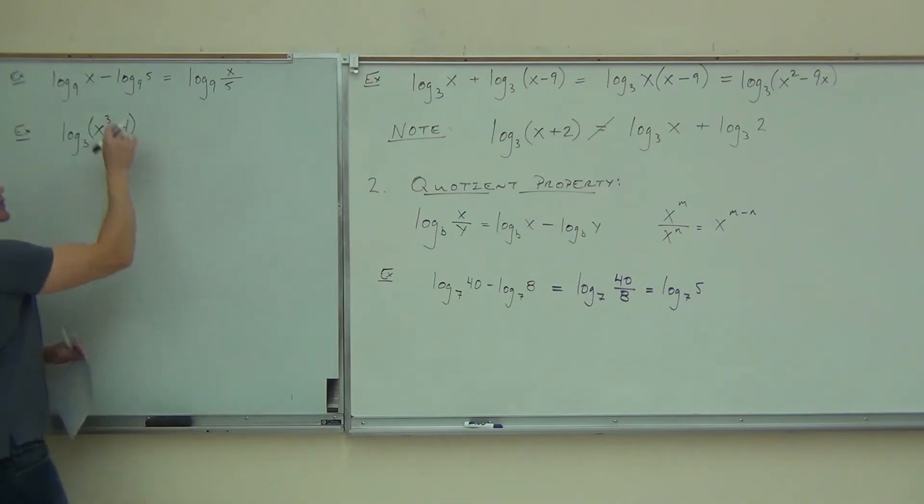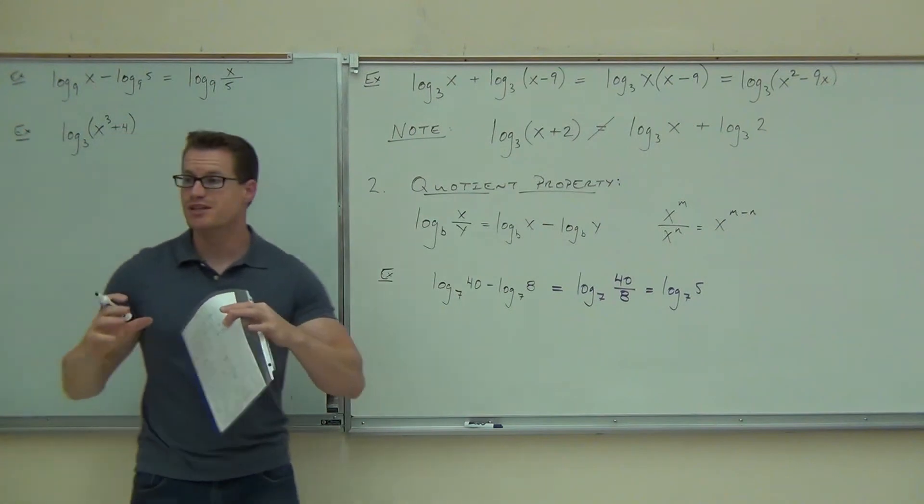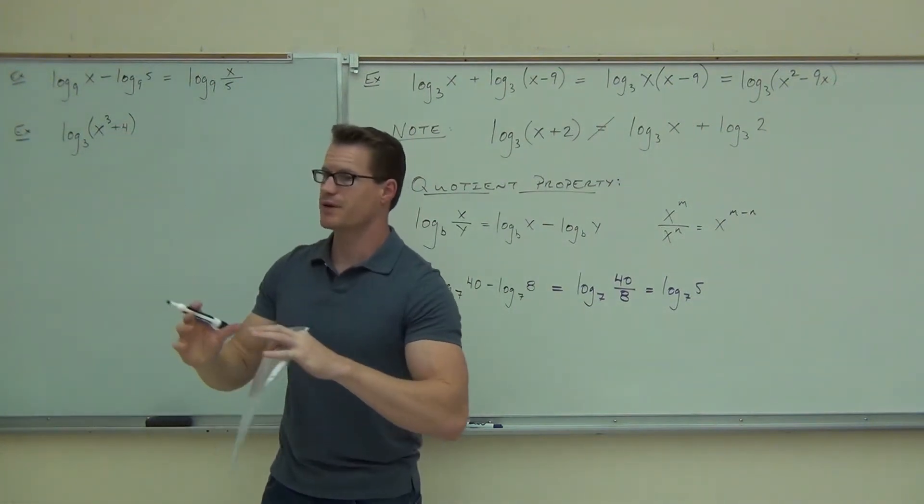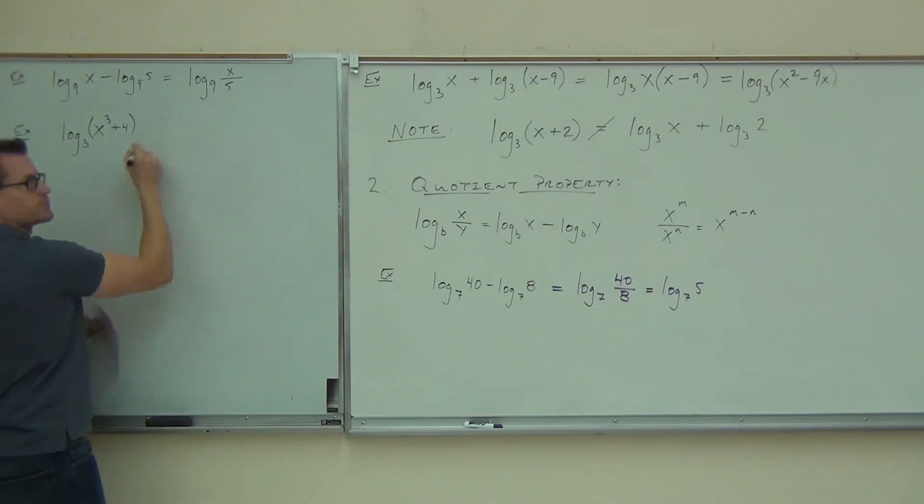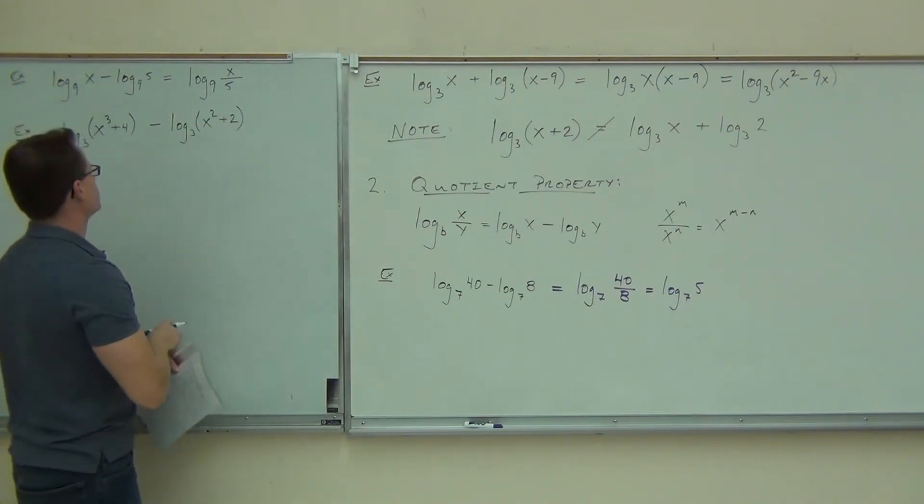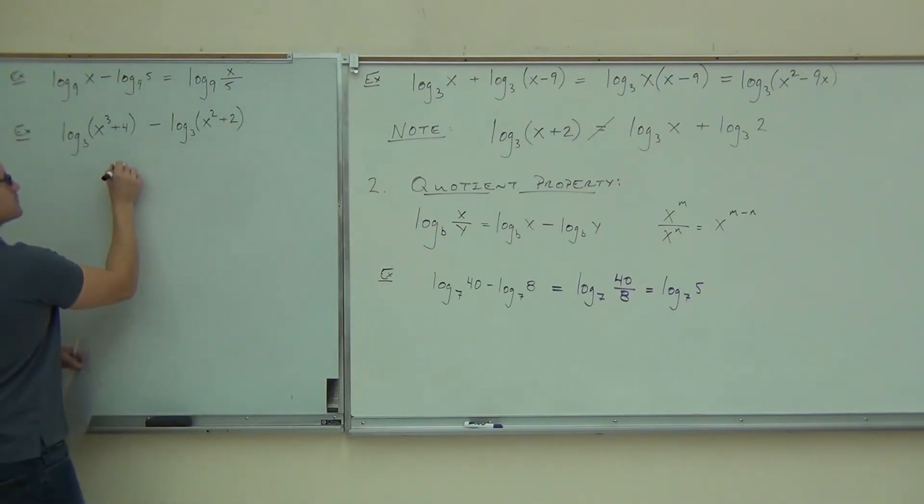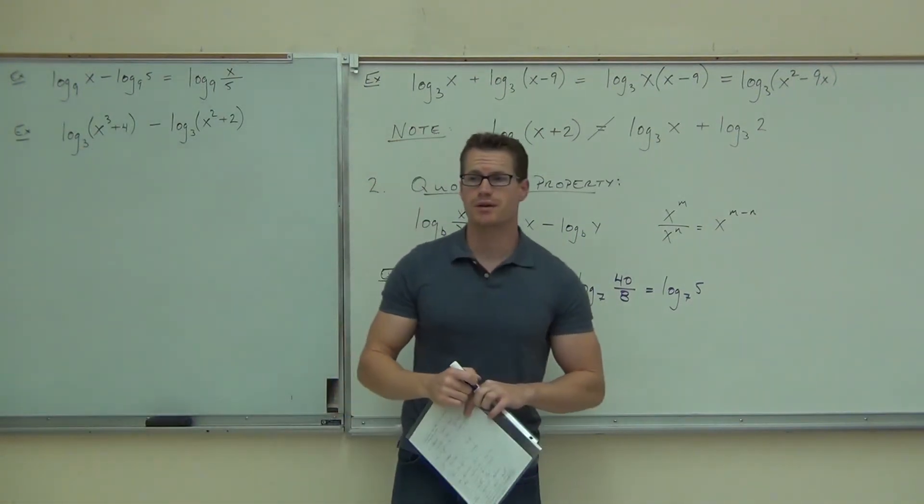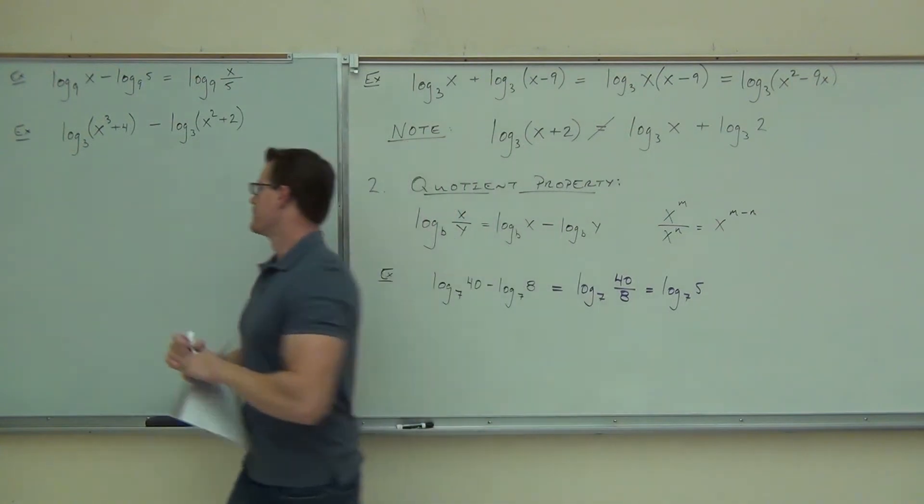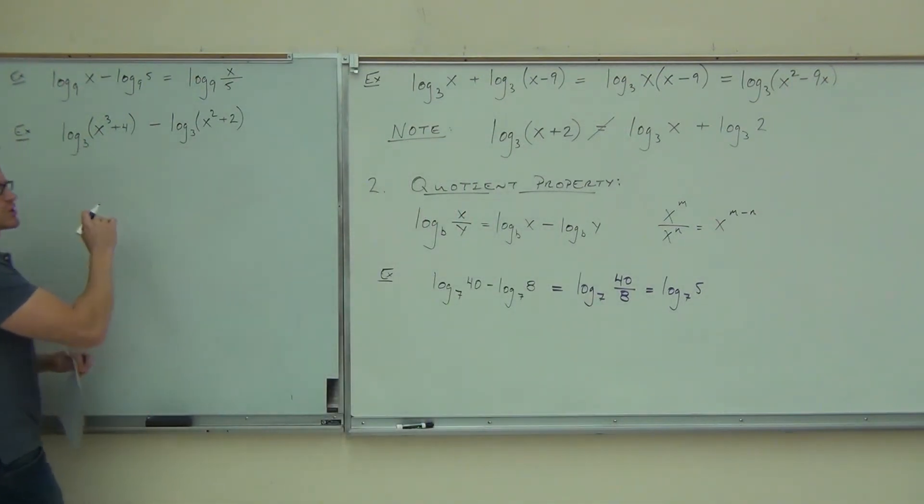Okay, log base 3 of x cubed plus 4. Notice how I'm putting the x cubed plus 4 in parentheses that's saying log of that entire thing. If I didn't do that, it could be misconstrued just for people to think this and then plus 4 at the end. So we really do need to show those parentheses. Can you put these ones together? Let's go ahead and try that. What exactly are we going to get?